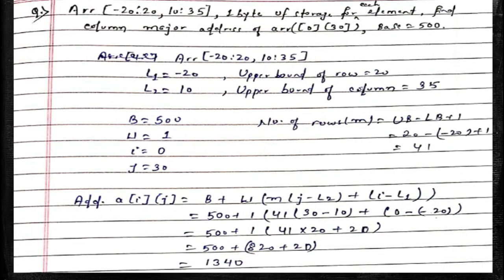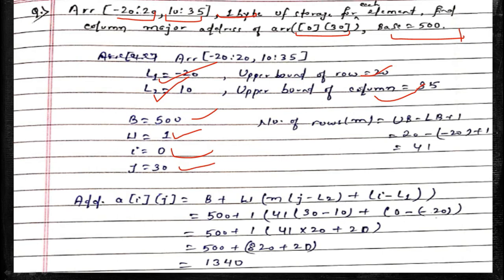For the column-major example: the array has rows from -20 to 20 and columns from 10 to 35. One byte of storage per element. Find the address of a[0][30], with base address 500. Number of rows = upper bound minus lower bound plus 1 = 20 - (-20) + 1 = 41. Applying the column-major formula with base address 500, size 1, number of rows 41, desired column 30, lower bound of column 10, desired row 0, and lower bound of row -20, we get the answer.